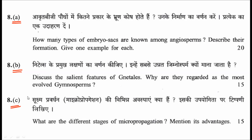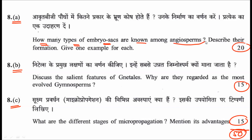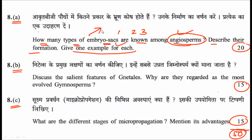Question eight is the last question, divided into three parts — A, B, and C — carrying 20, 15, and 15 marks. The first sub-question asks how many types of embryos are known among angiosperms, and asks you to describe their formation and give an example for each. This three-part answer — types, formation, and examples — earns 20 marks.